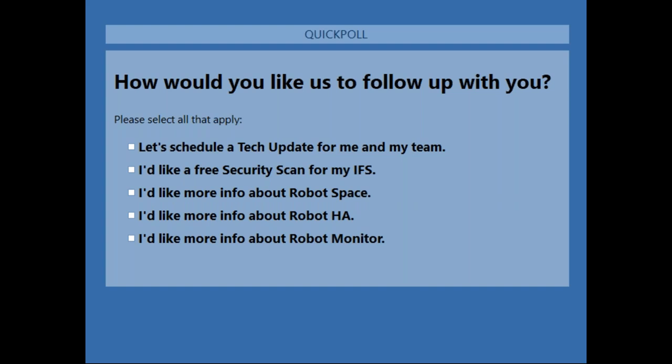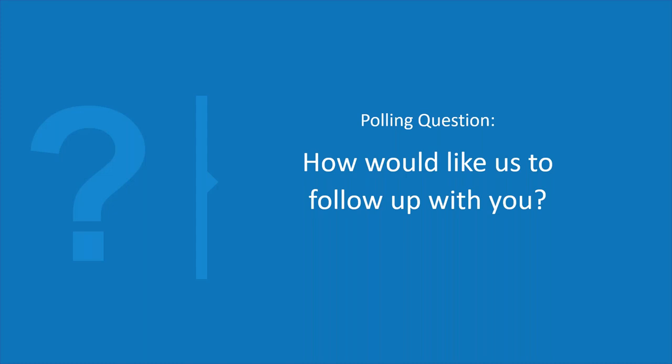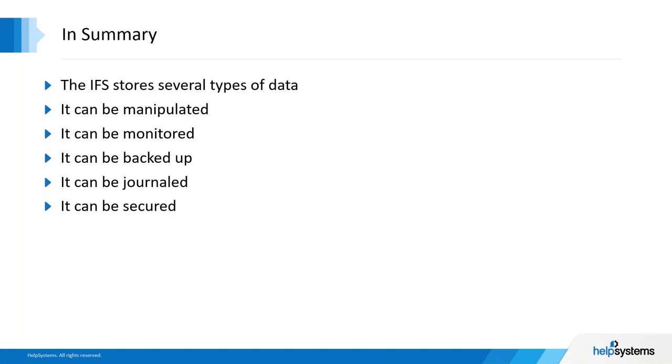Any of the products you saw today are available for a 30-day trial — Robot Monitor, Robot Space, Robot HA. Regarding Robot Space versus the retrieve disk info command: you can't compare IFS collection to collection using retrieve disk info, plus there are a multitude of steps to do it. Robot Space is automated, and there's also the aging of the IFS which retrieve disk info doesn't do. We run into more and more customers who say their backups are taking too long or replication is getting behind — it's because they're not cleaning up the IFS. We've covered manipulating the IFS, monitoring, backing up, journaling, and security — all things that need to be done as this has become more important as the server has gotten closer to the internet.